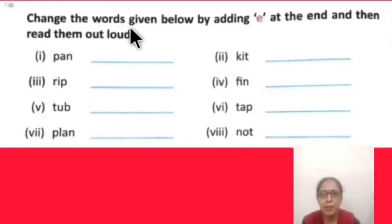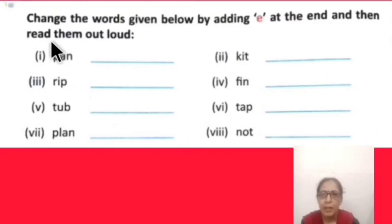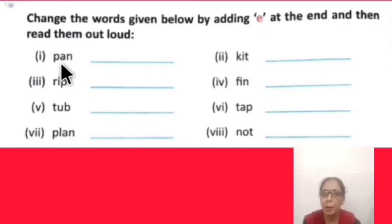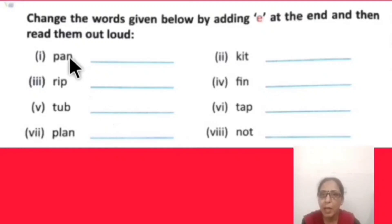Change the words given below by adding E at the end, and then read them out loud. First word: P-A-N, 'pan' — the cooking vessel mum uses to cook food. When E is added at the end, the word becomes 'pane' — the glass of a window.